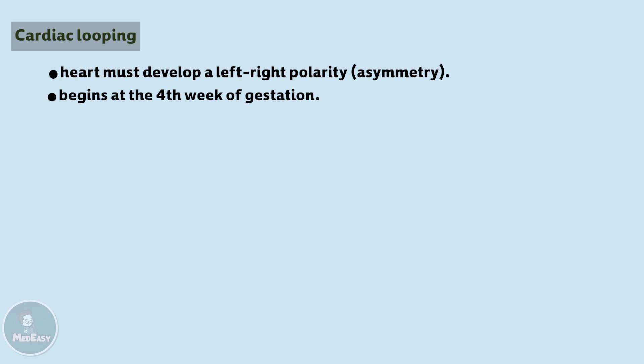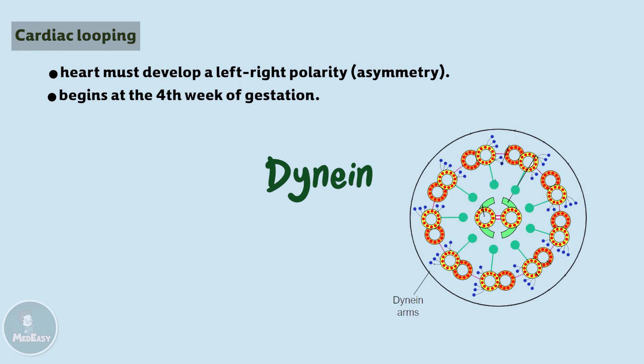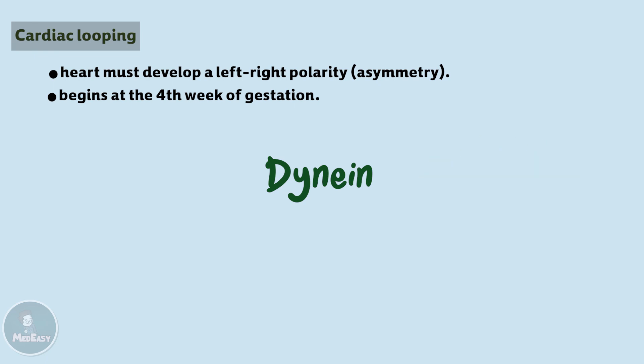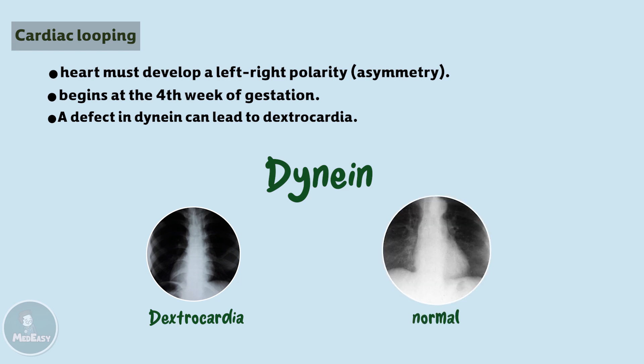Establishing this left-right polarity requires dynein, which is a motor protein that is a component of cilia. Any defect in this dynein arm can lead to dextrocardia, which is a rare condition in which the apex of the heart is positioned on the right rather than the normal left position.